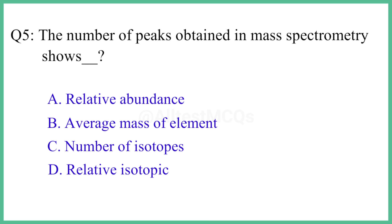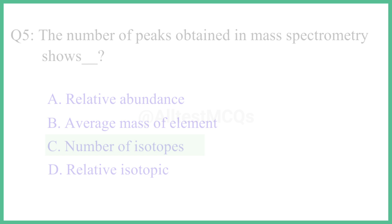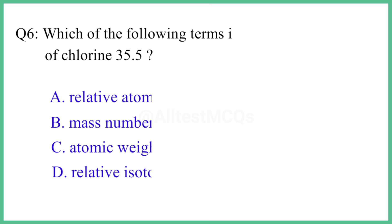Question number 5. The number of peaks obtained in mass spectrometry shows? The right answer is option C: number of isotopes.